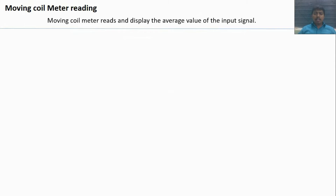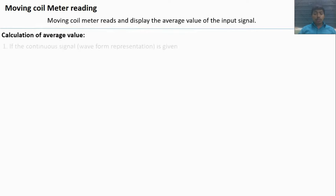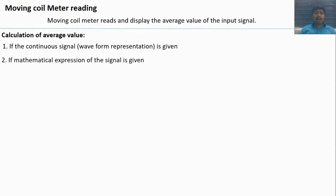The permanent magnet moving coil type meter reads and displays the average value of the input signal. If an input signal is given, it calculates the average value and displays that average value of the input signal. We should know how to calculate the average value if a continuous signal waveform or mathematical expression is given.